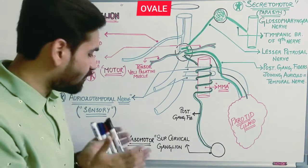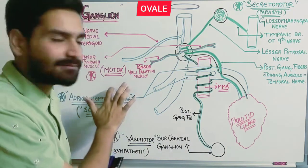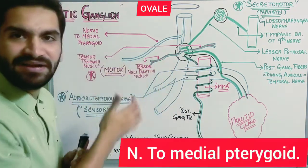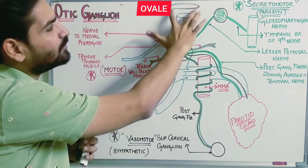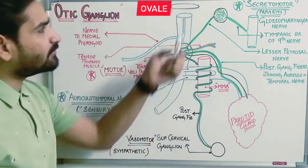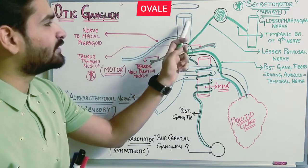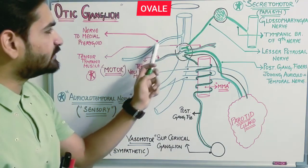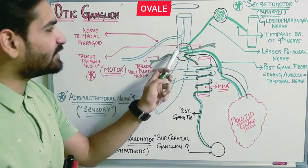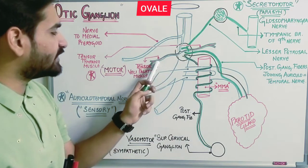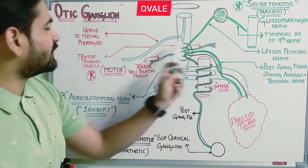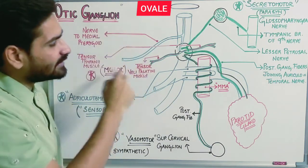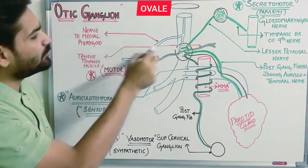Starting with the motor supply: the motor supply of the otic ganglion to the parotid gland will be through the nerve to medial pterygoid. This is your mandibular nerve; from the foramen ovale it exits downward, then divides, giving the nerve to medial pterygoid as the main branch. Everything written in red color in the diagram represents the motor supply.